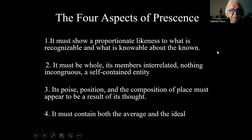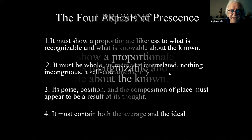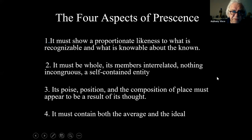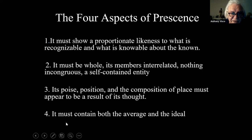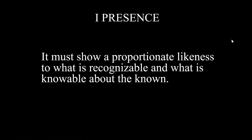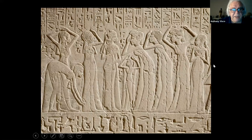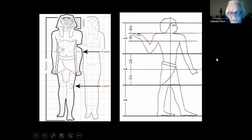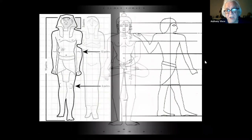Four aspects of presence: first, it must show a proportionate likeness to what is recognizable, what is knowable about the known. Second, it must be whole, its members interrelated, nothing incongruous, a self-contained entity. Third, its poised position and composition of place must appear to be the result of its thought. Fourth, it must contain both the average and the ideal. Every culture has an idea of what's proportionate and whole. The incongruity of parts, cropping a figure to make it illegible — throughout history, this was considered taboo. We see this in Egyptian culture and in Buddhist culture.